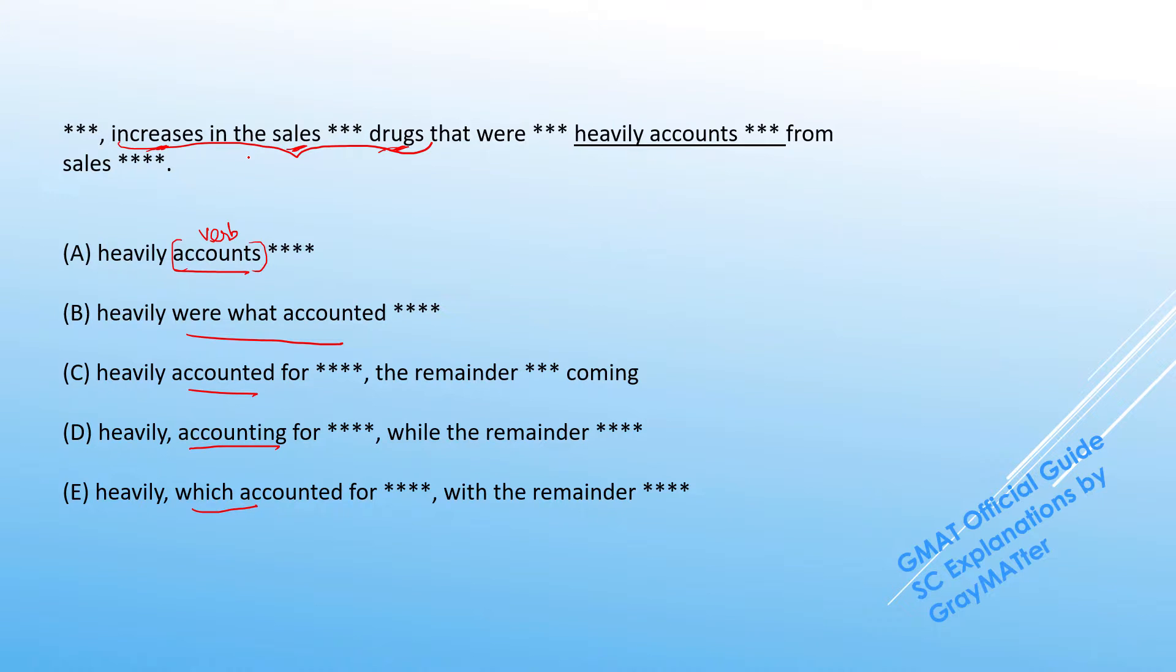But whatever the prepositional phrase, the main verb will always apply to the main subject, and the subject here is 'increases,' which is plural. So we have a subject-verb problem here because 'accounts' is a singular verb. It should have been 'heavily account.' So A goes off by subject-verb agreement.